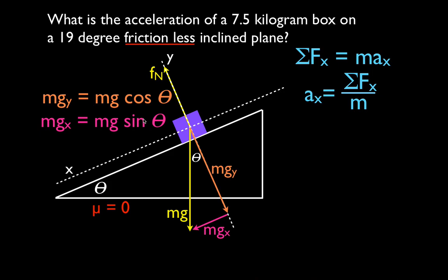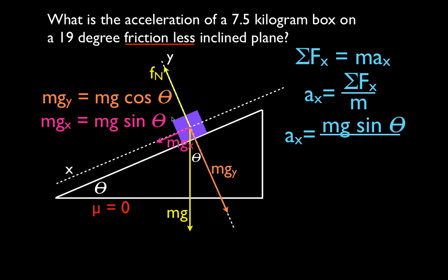I'll move the x-component vector up onto the object so you can see it's actually acting on the object. It's the only force acting on the object in the x direction. Summing forces in x: there is only one force, mgx = mg·sinθ. Dividing by mass, the mass on top and bottom cancel, so the acceleration equals g times sine of theta — the acceleration due to gravity times sine of theta.